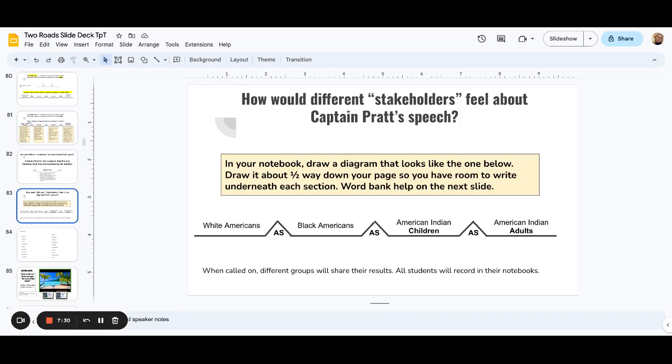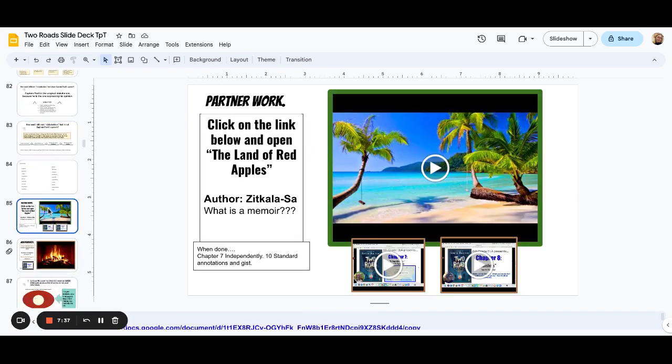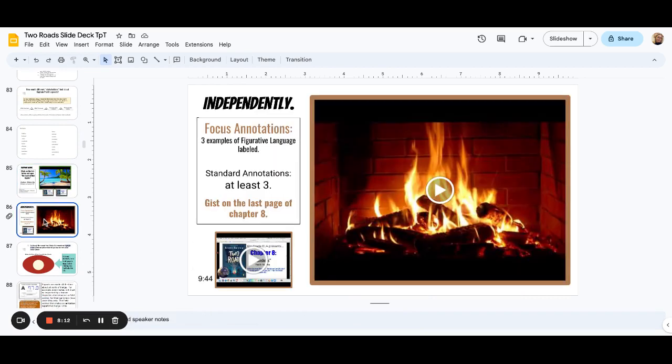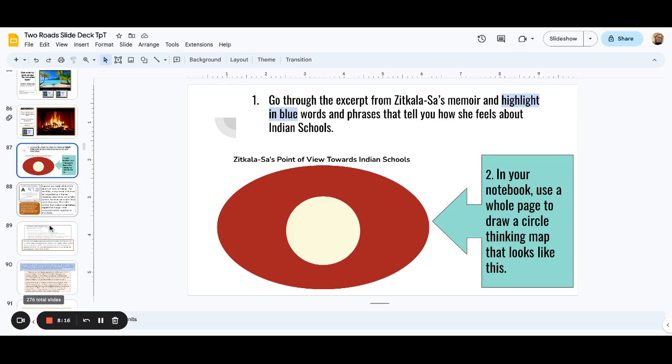Here's a fun activity. This is a memoir. This is a nonfiction memoir by Zitkala Saw, who was a Native American who was kidnapped from her family and taken to a Native American boarding school. And her memoir is called The Land of Red Apples. It is linked below for you, and there is a lot. I can't show you the link in the video because it takes me out of the recording. This is a very lengthy memoir with questions for the kids to answer that you can print. Then you do Zitkala Saw's point of view towards Native American schools, just like Captain Pratt's.